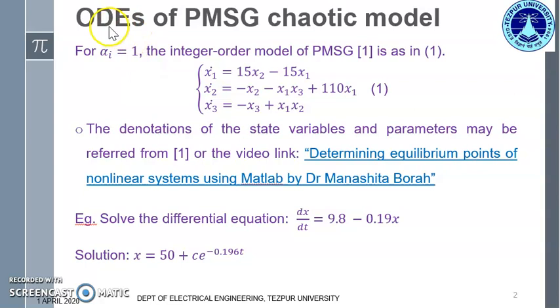So here we begin with the ODEs of PMSG chaotic model. In the model of PMSG taken from reference 1, if we replace all the alpha i's by 1, we get the equation as in given number 1. The denotations of the state variables x1, x2 and x3 and the parameters 15 and 110 may be referred from reference 1 or from the video link, determining equilibrium points of nonlinear systems using MATLAB.